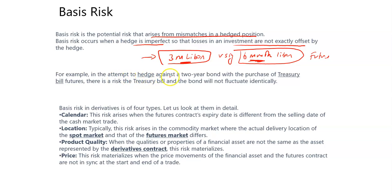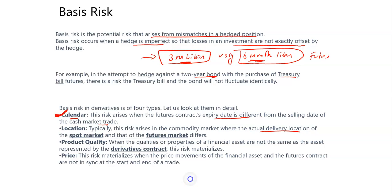In the attempt to hedge a two-year bond by purchasing T-bills — T-bills are not similar to bonds, they are different — you are exposed to basis risk. Basis risk has different types. The risk arises when the future contract expiry is different from the selling date of the cash market instrument. There is also location risk, which typically arises in commodity markets where the actual delivery location of the spot market and the futures market differs. And there is product quality risk, when the qualities or properties of the financial asset are not the same as the asset represented by the derivative contract.